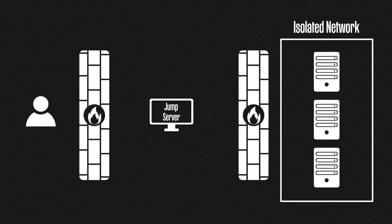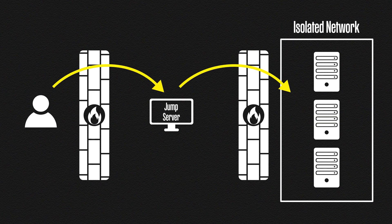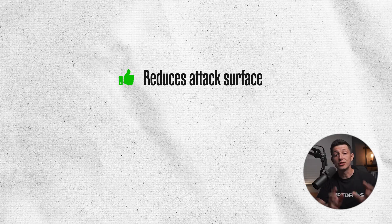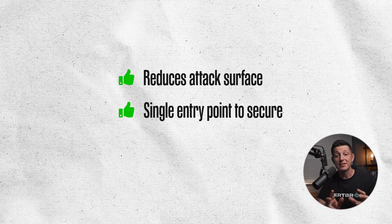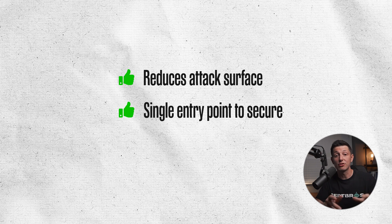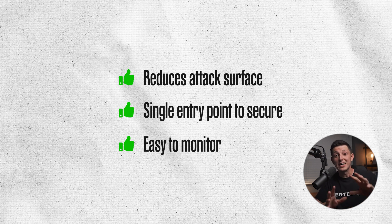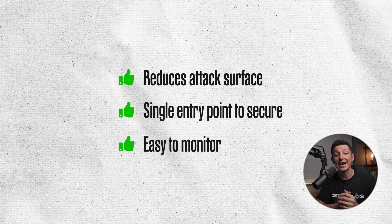So now, anytime we want to connect to one of the remote devices, we first need to connect to the jump server and then connect — or jump — to the remote device. All connections are now filtered through this one jump server. By using this method, we now only have one entry point instead of one for each device, which drastically reduces our attack surface. It also means we can focus all of our attention on this one single entry point, ensuring everything is as secure as possible. We do this by making sure everything is up to date and the server is hardened with security policies and tools. Using a jump server as the centralized point of access also makes it easier to monitor and log activity, making it much harder for attackers to compromise the jump server and gain access to our isolated network.